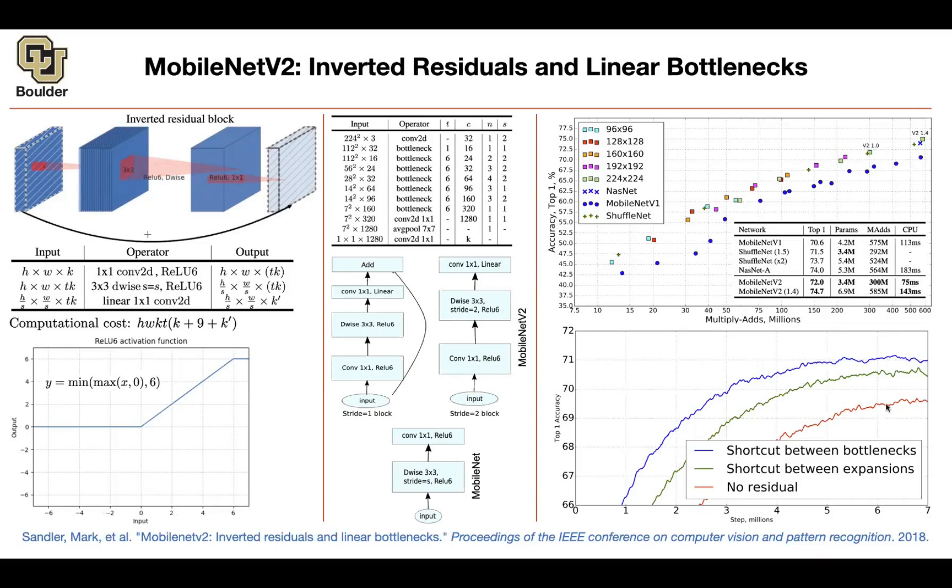The residual connections are going to give you this red curve in terms of top accuracy. And this is during training steps in millions. If you put a shortcut between expansions, this is the accuracy that you get. And if you put a shortcut between bottlenecks, the network behaves better. So not only it's cheaper, but also it's doing better in terms of accuracy and convergence.